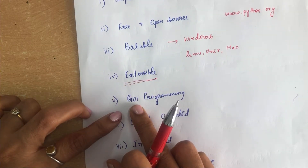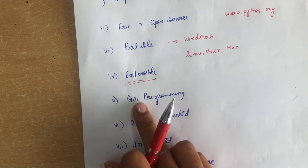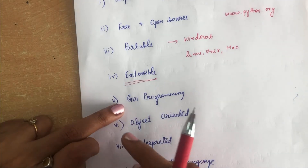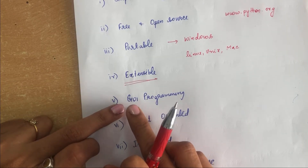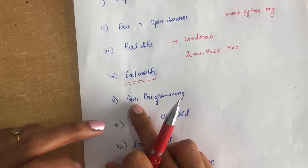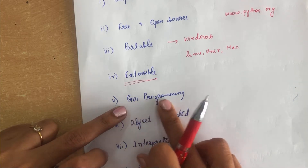The next feature is GUI programming. GUI stands for Graphical User Interface. Users always want their software with a GUI, as it is more comfortable and easily accessible. Python has a wide range of libraries for creating GUI applications, so you can use Python to develop GUI-based applications.